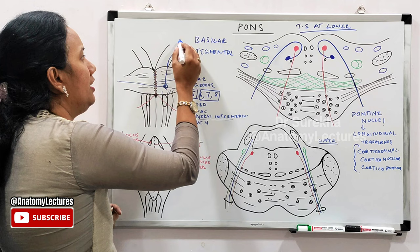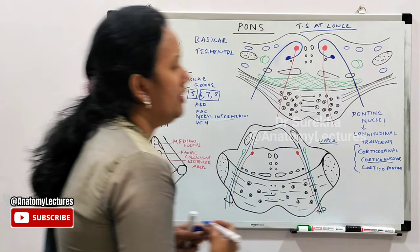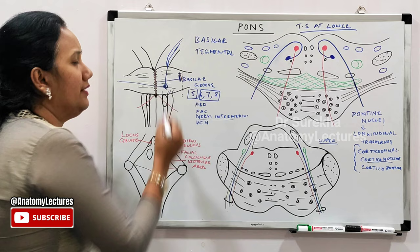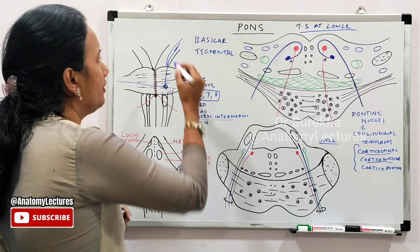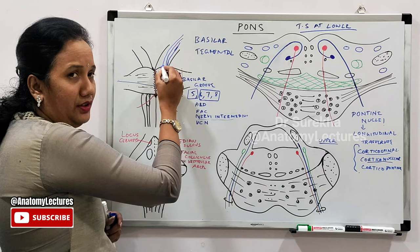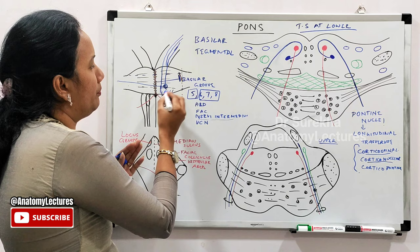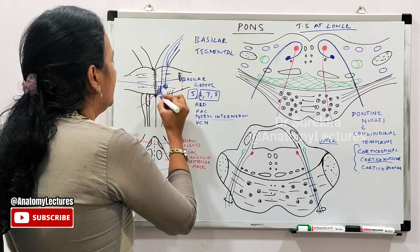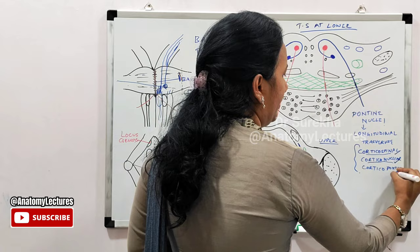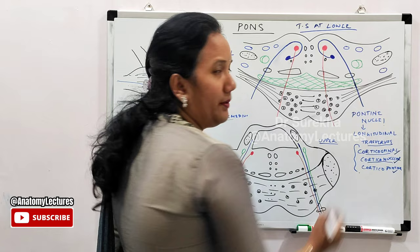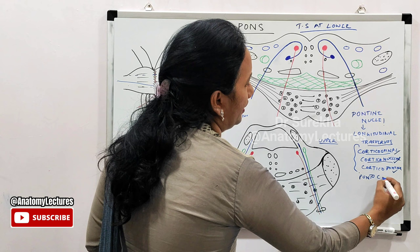Corticonuclear fibers travel from the cortex through the cerebral peduncle and terminate in the cranial nerve nuclei of the opposite side. Corticospinal fibers travel through the cerebral cortex, through the cerebral peduncle, through the pons, and at the lower end of the pons converge to form the pyramids of the medulla. So the longitudinal fibers are corticospinal, corticonuclear, and corticopontine; the transverse fibers are pontocerebellar fibers from pontine nuclei to the opposite cerebellum.